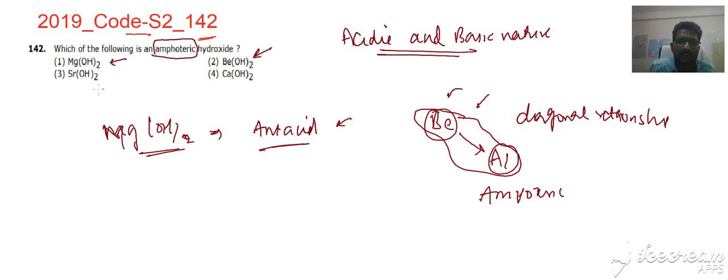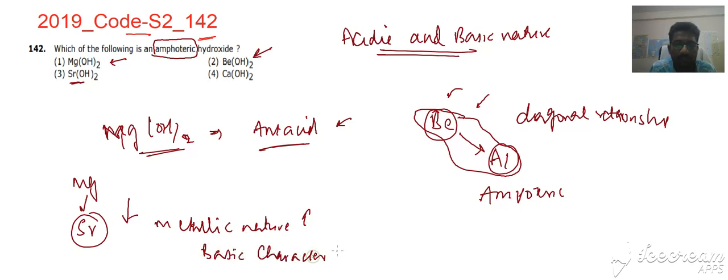Sr(OH)₂ - strontium comes after magnesium. As you go down the group, the metallic nature increases. As the metallic nature increases, the basic character of hydroxides increases.